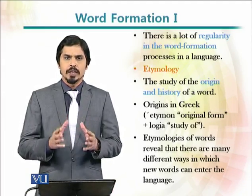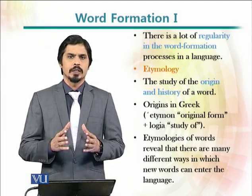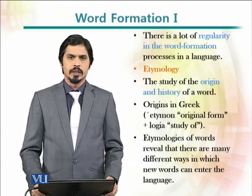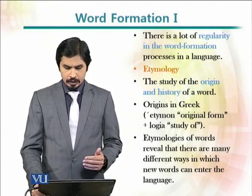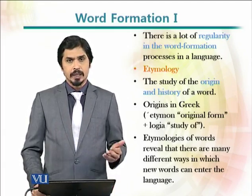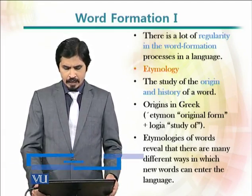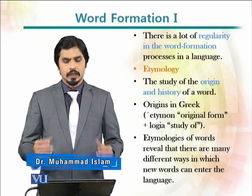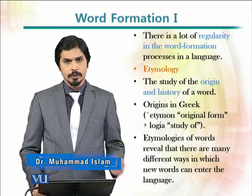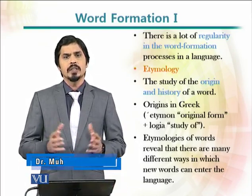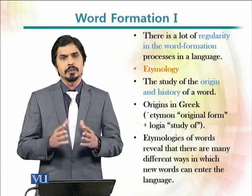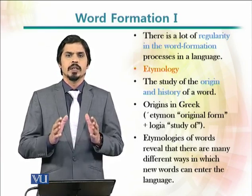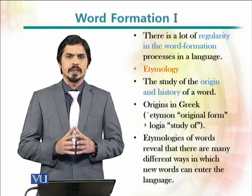This branch of knowledge is called etymology. Etymology is made of two words: 'etymon,' meaning original form, and 'logia,' meaning study of. So etymology means the study of original forms. The etymology of various words in English reveals that there have been multiple sources from which various words came.